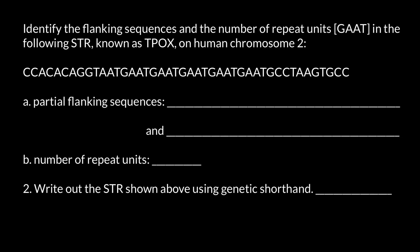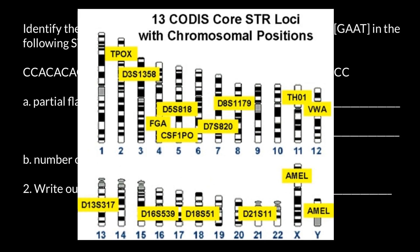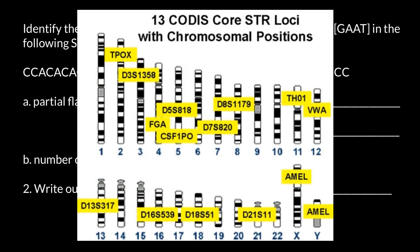If you take a look at this picture, you can see markers on chromosomes. Some chromosomes don't have markers, some have one marker, and some have two markers. The marker of our interest — the locus — is located on chromosome number two: TPOX.